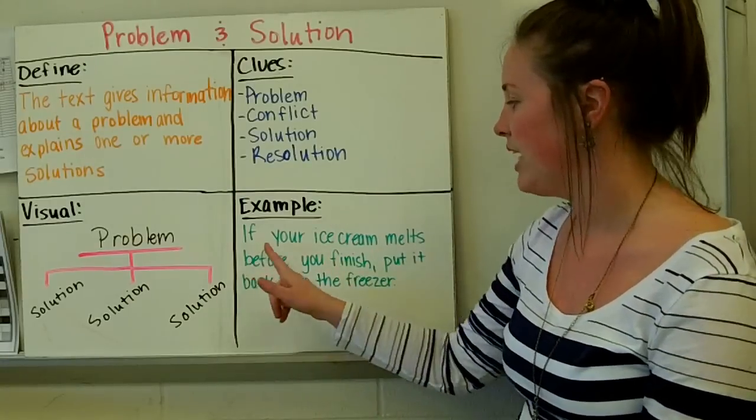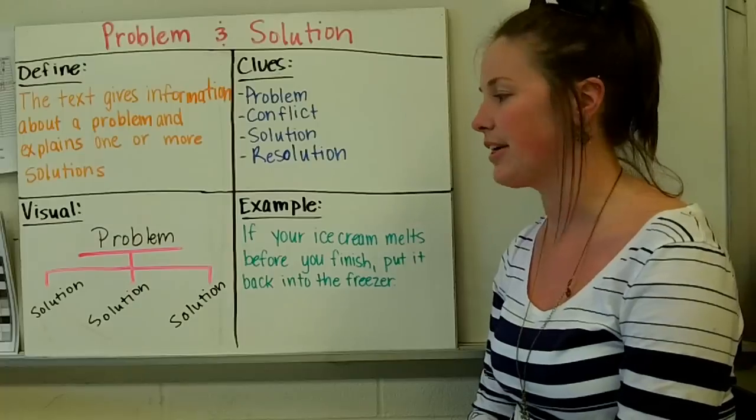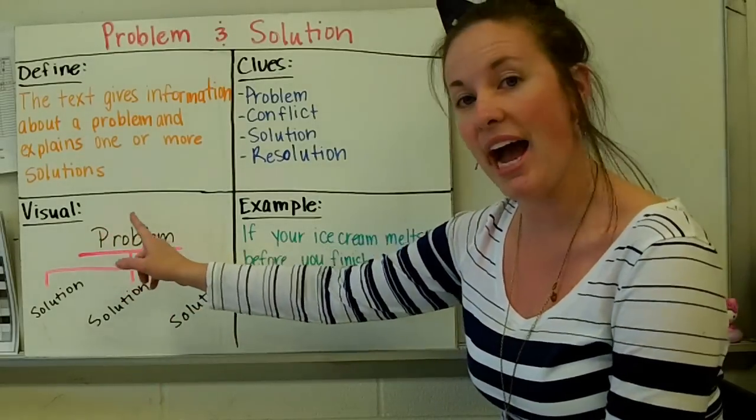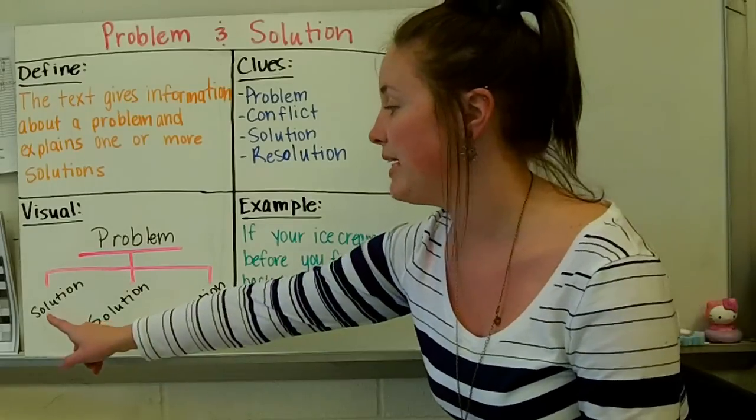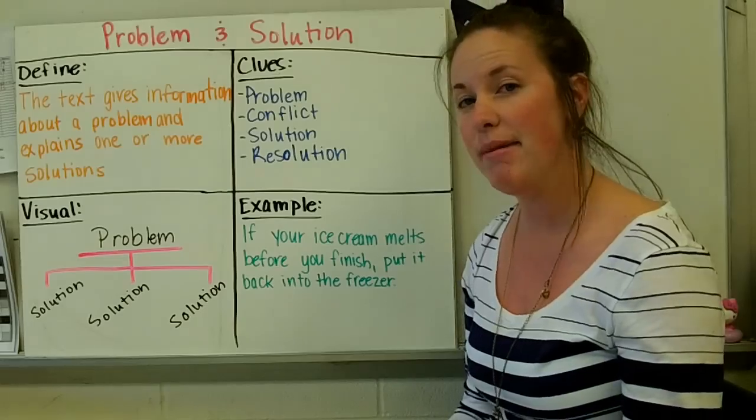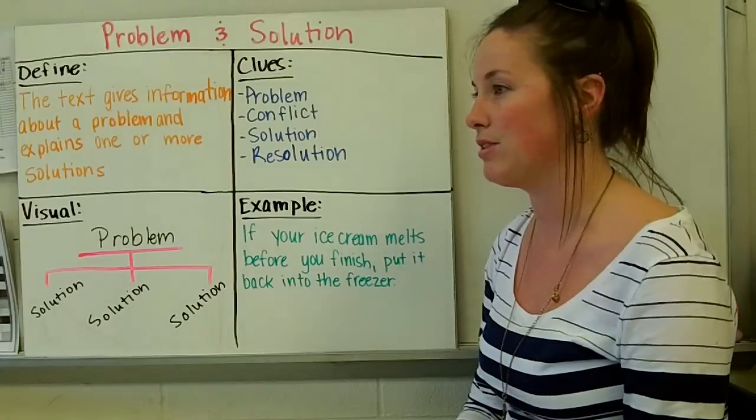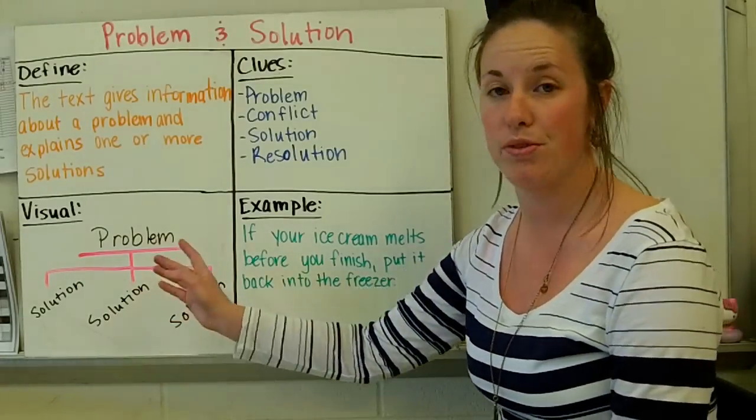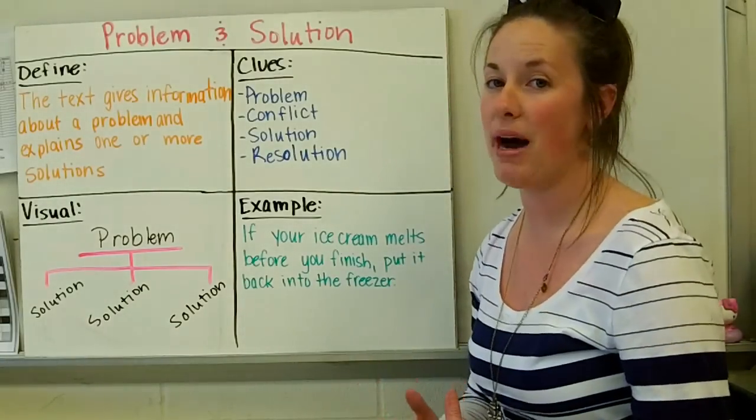Here's an example. If your ice cream melts before you finish, put it back into the freezer. Simple. So my problem would be that my ice cream is melting. A possible solution for my problem would be to stick it back in the freezer. And you may have other solutions, but in this example I'm just giving one possible solution. Another solution could be, though, that you throw your ice cream away. You get a new ice cream. So those are all possible solutions.